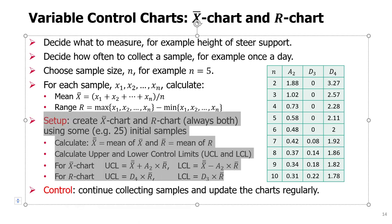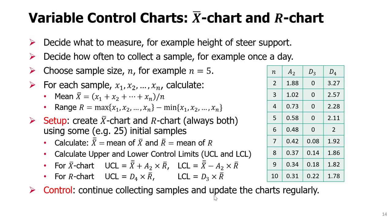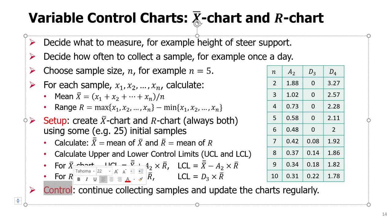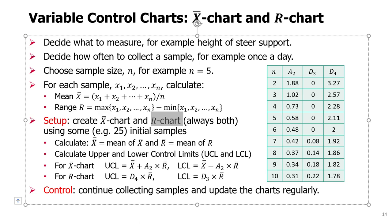Once we do the setup of the control charts — the pair of charts — this is something we should do once when the process is stable, and never repeat until there is some kind of significant change in the process where we would expect a change of variation happening due to assignable cause. Once we set up the chart, we should then control the process. We continue collecting those samples — every day, collect another five units, calculate the mean, calculate the range, and add a point to each chart to see if the process is still in control. We update those charts regularly.